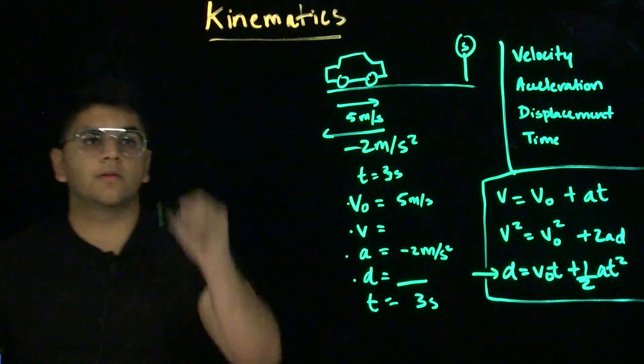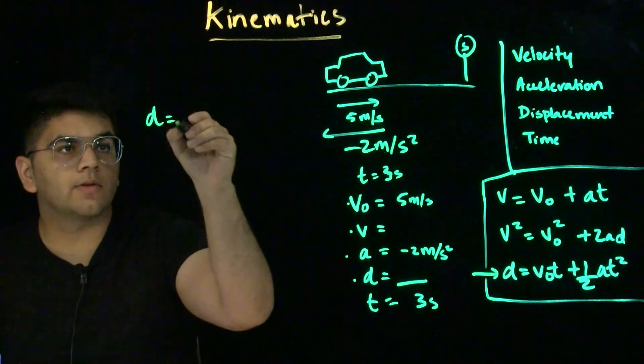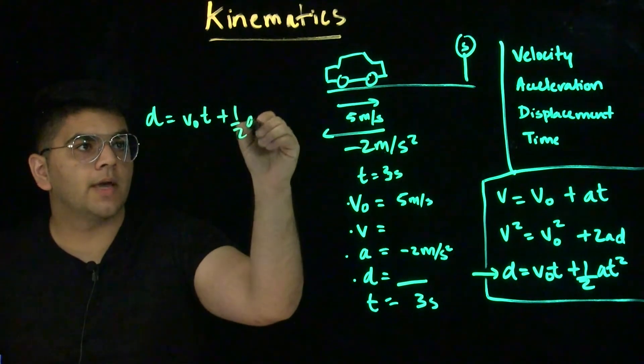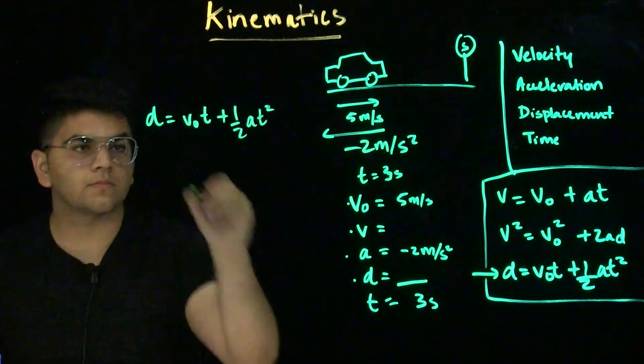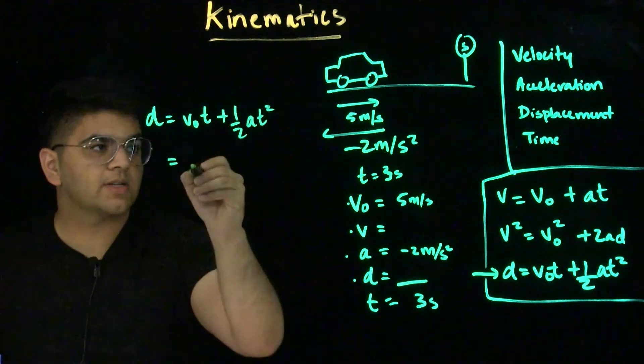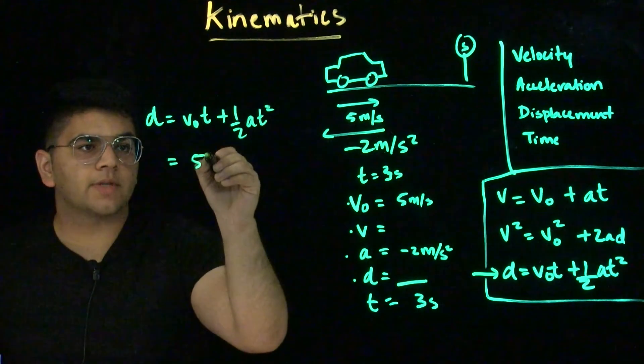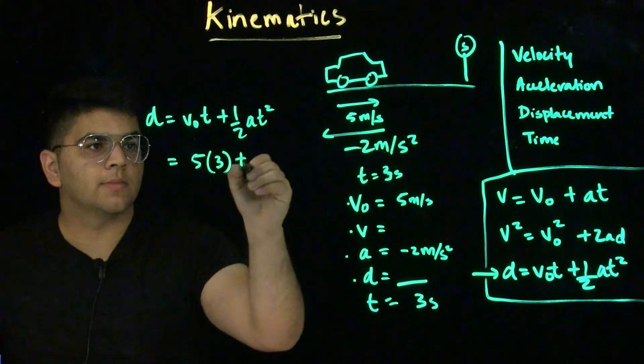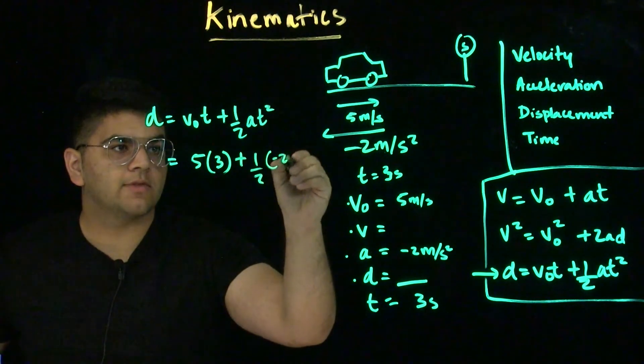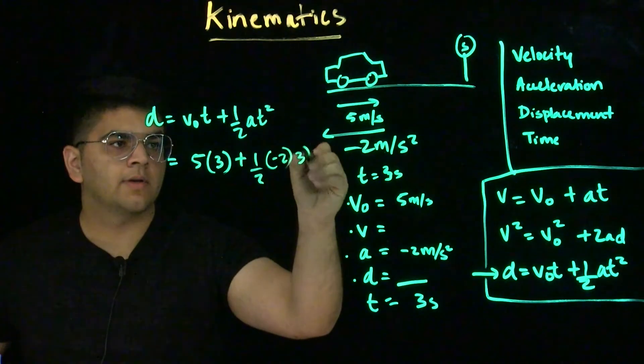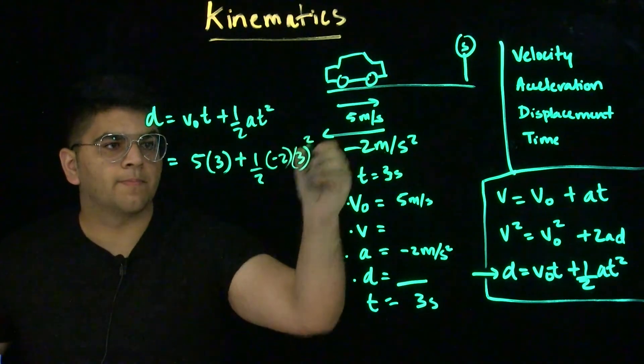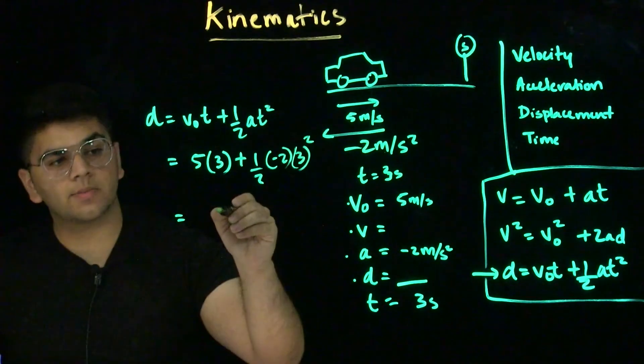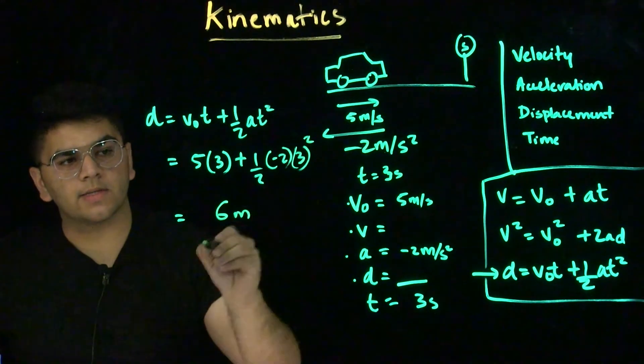Let's plug in our values. We know that displacement equals v₀t plus ½at². We know the initial velocity is 5 meters per second times the time it takes, which is 3 seconds, plus ½ times negative 2 for acceleration, and 3 for time. After we do this math, we'll see that the displacement of the car is 6 meters.